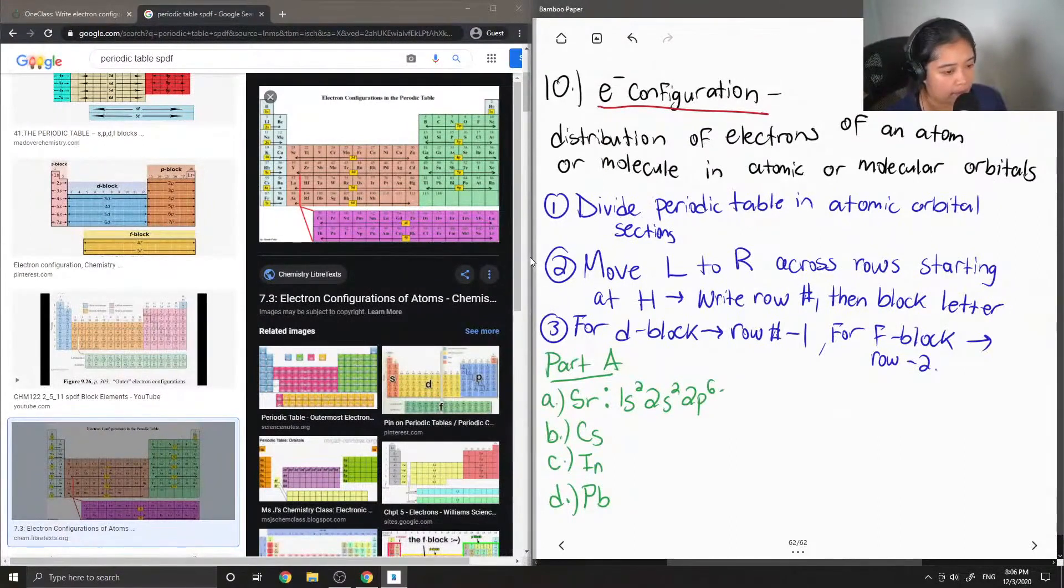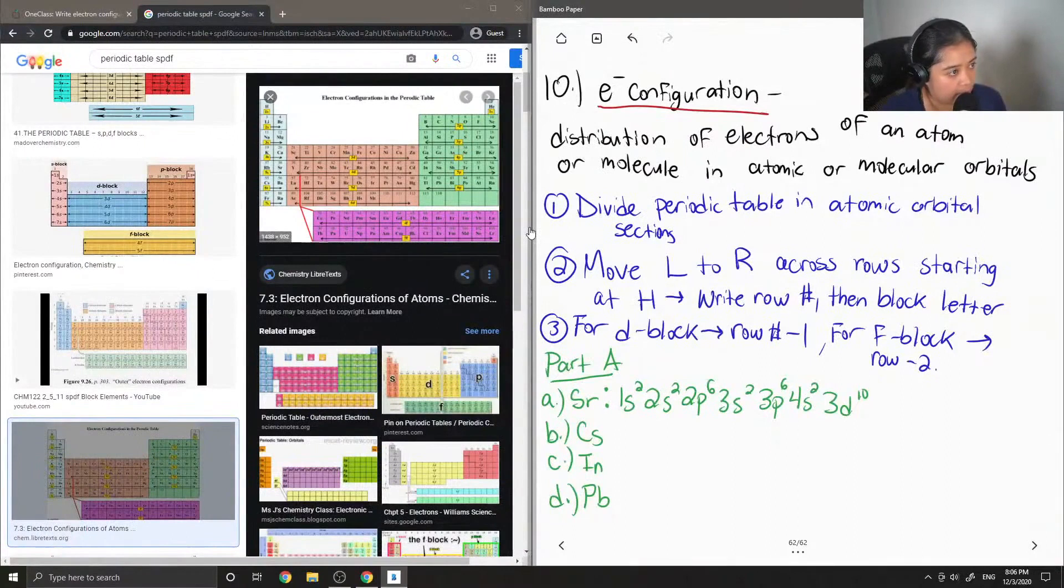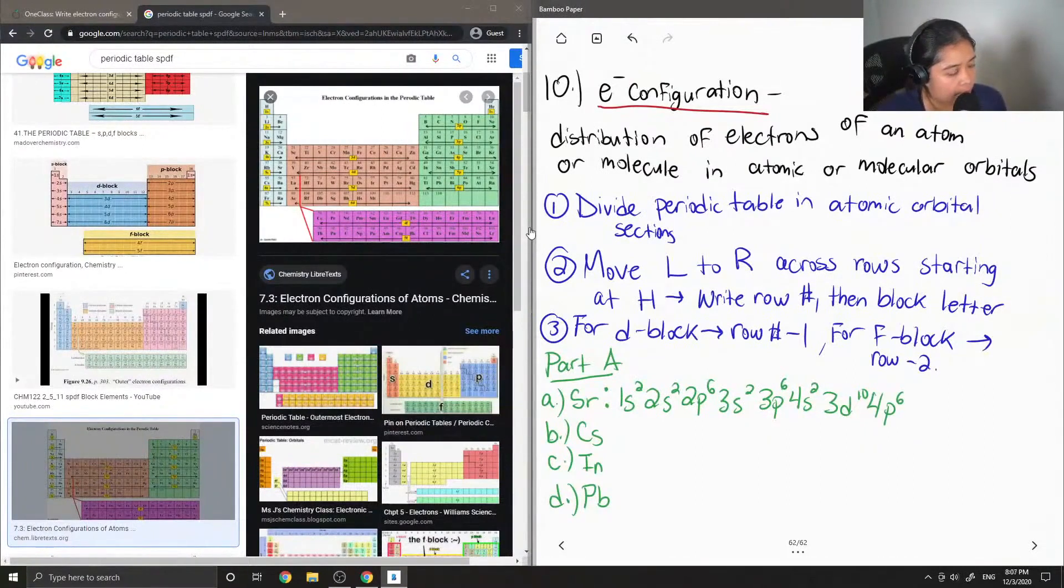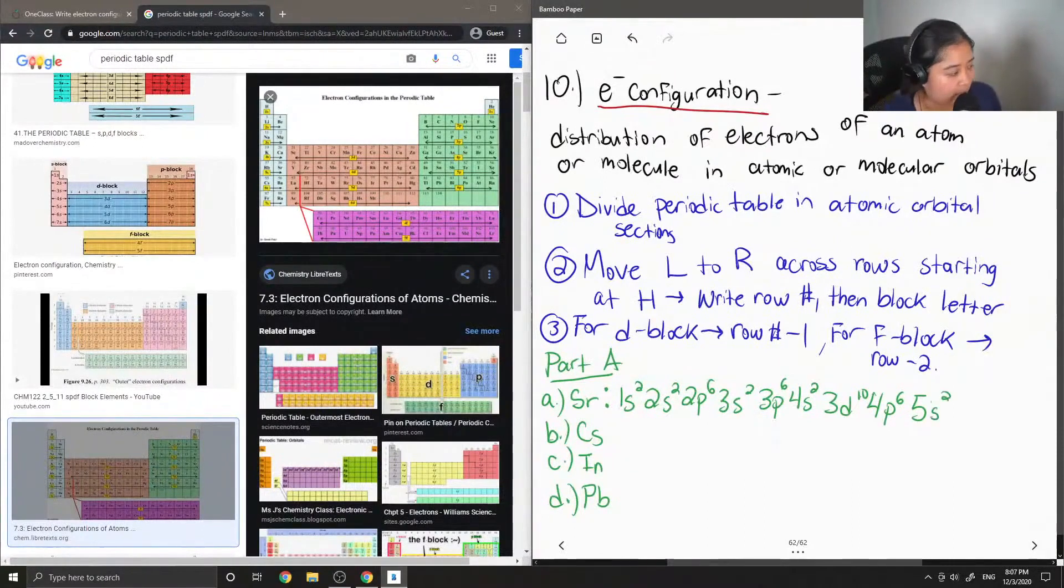and then 3s2, 3p6, 4s2, and then 3d10. You can see 1, 2, 3, 4, 5, 6, 7, 8, 9, 10, and then 4p6. And then lastly 5s2 gives us the electron configuration of the neutral atom of strontium.